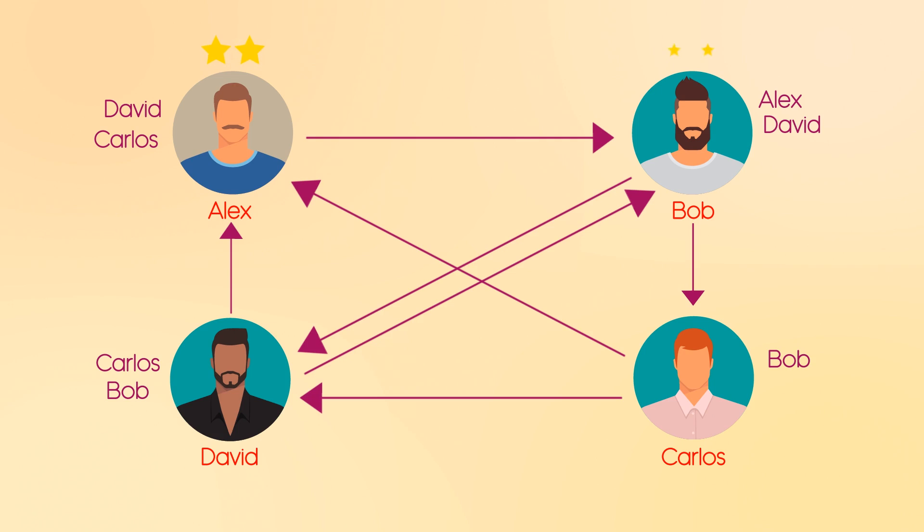Something to note is that Alex, Bob, and David all have two endorsements each, however Carlos only has one, so it looks like Carlos would be the worst pick, which we will find is mathematically true. But what about the rest?